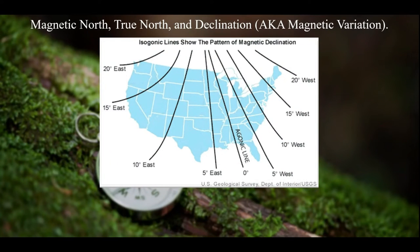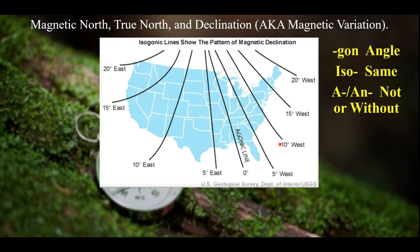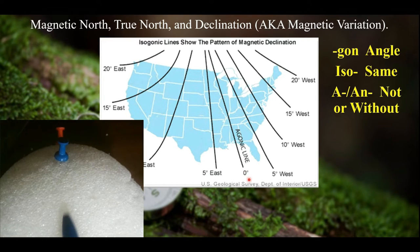This brings up the isogonic lines chart. Breaking down the root words: 'gon' means angle — as in polygon, octagon, heptagon — 'iso' means the same, and 'a' or 'an' is a prefix meaning not or without. Each line on the chart is an isogonic line where the declination angle is the same. For example, anywhere on the line labeled 10 degrees west, the declination is 10 degrees. In Northern California on the 15-degree line, the declination is 15 degrees throughout. The agonic line is a special isogonic line where declination is zero degrees.